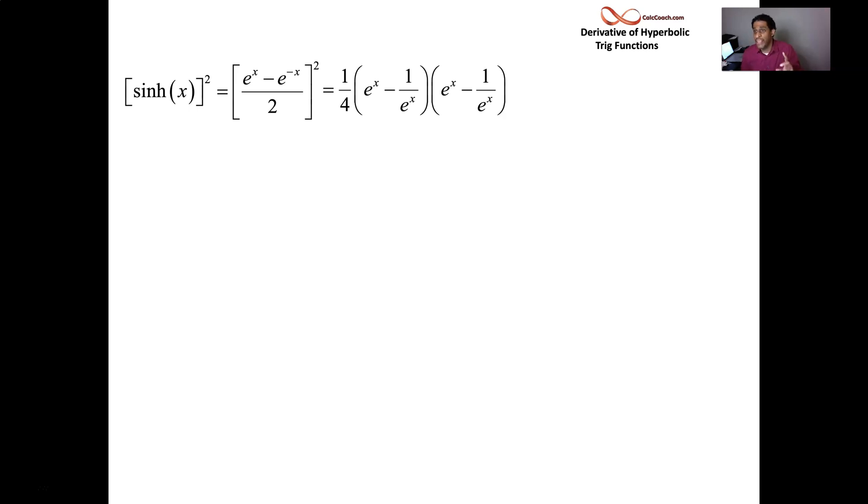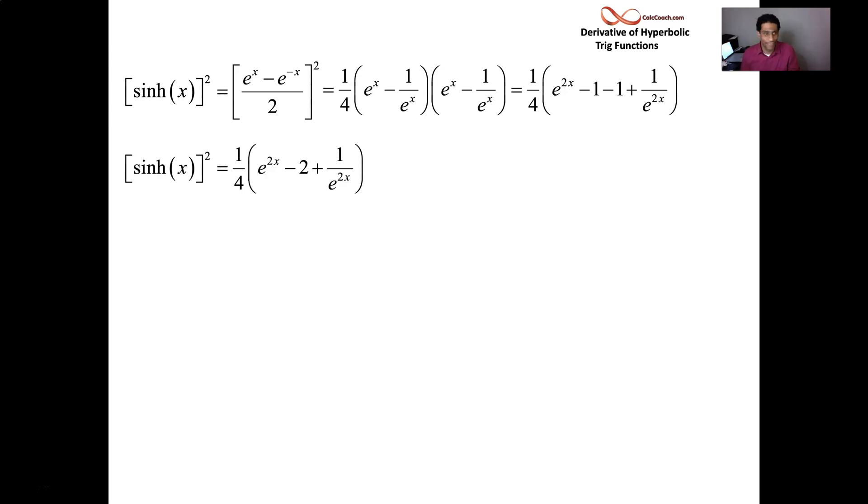So we have e, and rewrite e to the minus x as 1 over e to the x. e to the x times e to the x is e to the 2x. You add the exponents together. Then you have minus 1 over e to the 2x. The two middle terms end up being negative 1 and negative 1. So combining, we get negative 2.